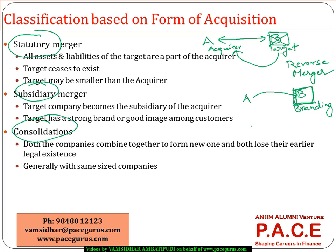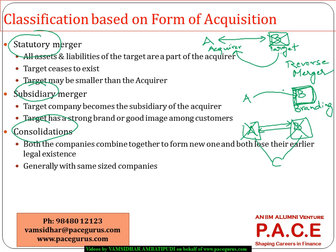In a subsidiary merger, the focus is on B retaining a separate identity in the market. In a consolidation, both A and B cease to exist and combine together to form a new legal entity, C. A real-world example is Arcelor and Mittal coming together to form ArcelorMittal. This kind of deal is generally possible between companies of more or less equal size.